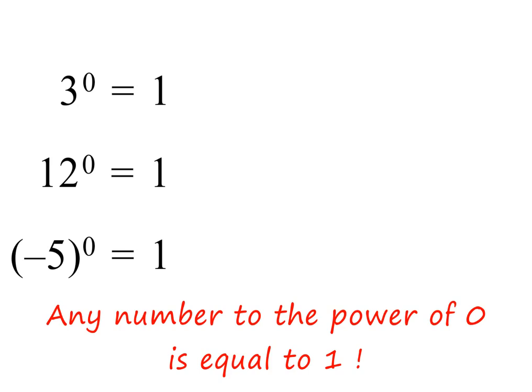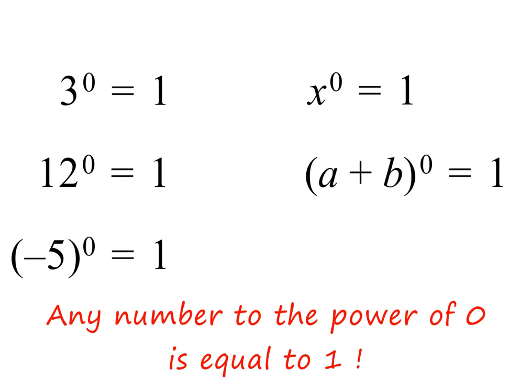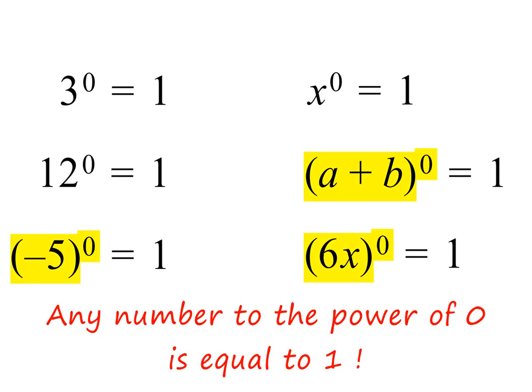In general, we can say that any number to the power of 0 is equal to 1. In other words, x to the power of 0, where x is any number, will be equal to 1. And a plus b all to the power of 0 will also be equal to 1. And 6x all to the power of 0 will be equal to 1. Please note, in the highlighted examples, the whole bracket is the base of the power. Please pause to study this important information.